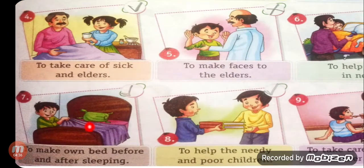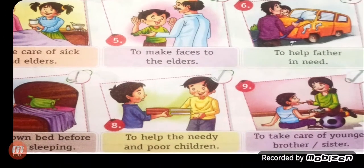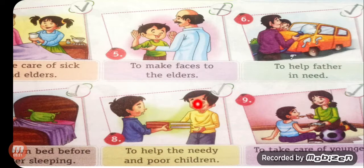Number 7: to make your own bed before and after sleeping. Generally, children get up and leave their bed as it is — that is a bad manner. You have to make your own bed. One child is shown making his own bed. It is a good quality; you are good to yourself and also helping your mother. Put a sign of right. Number 8: to help the needy and poor children — of course, yes, it is good. Now you are in fourth standard; if anybody needs your third class book, you can give them. It is a very good quality. Put a sign of right.